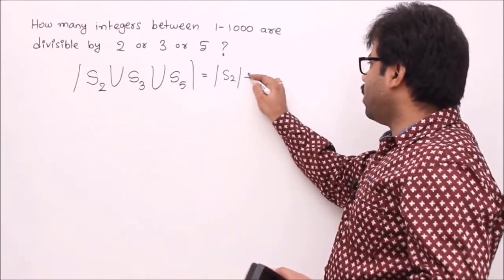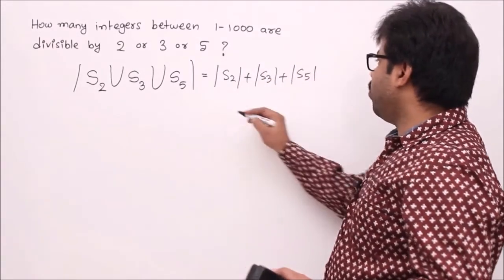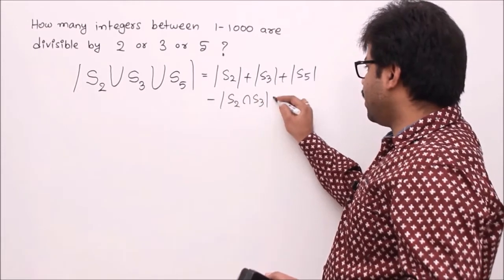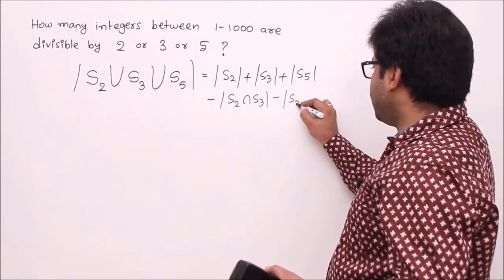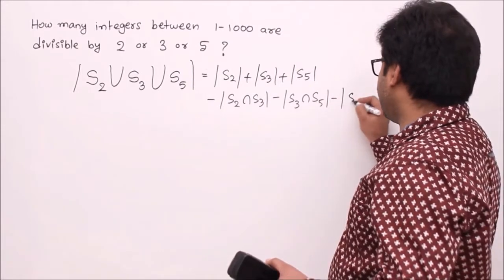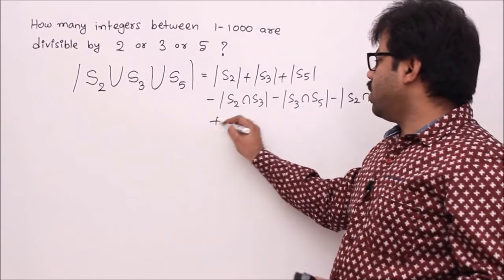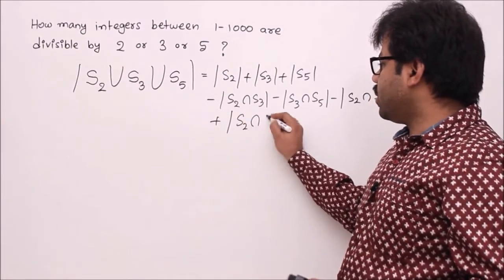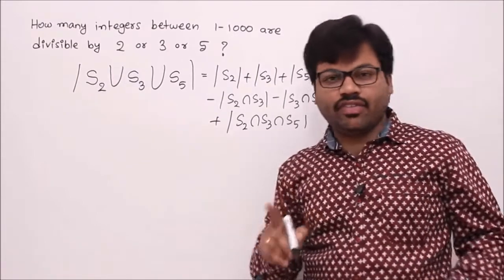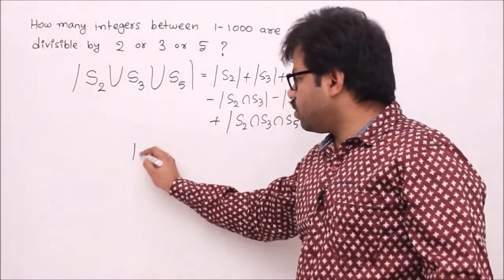By the formula: |S2 ∪ S3 ∪ S5| = |S2| + |S3| + |S5| minus the two-way intersections |S2∩S3|, |S3∩S5|, |S2∩S5|, plus the three-way intersection |S2∩S3∩S5|. We need to compute the size of each of these sets.